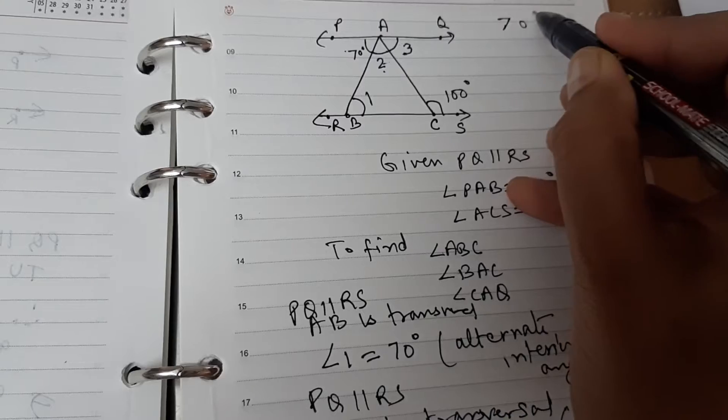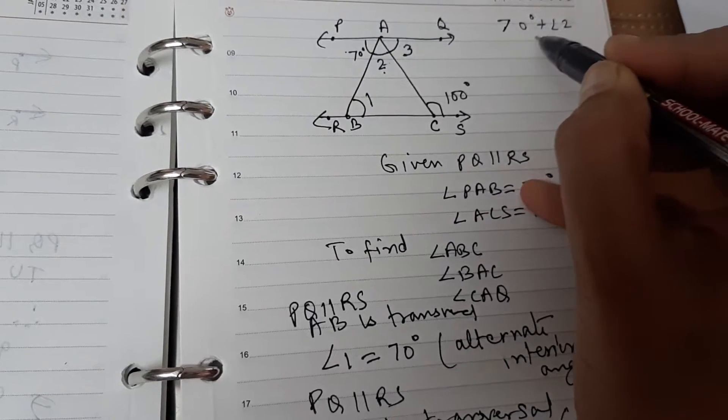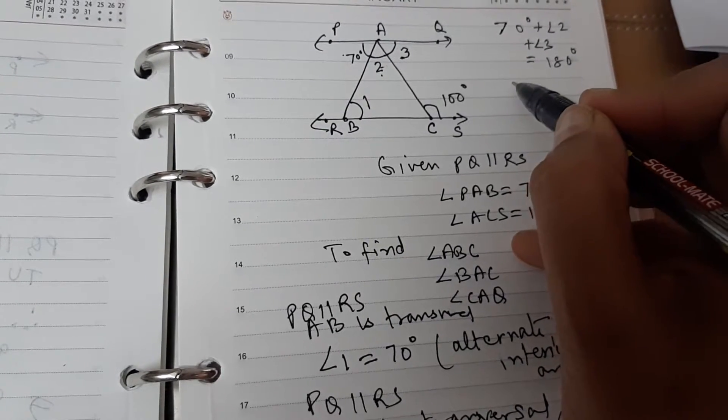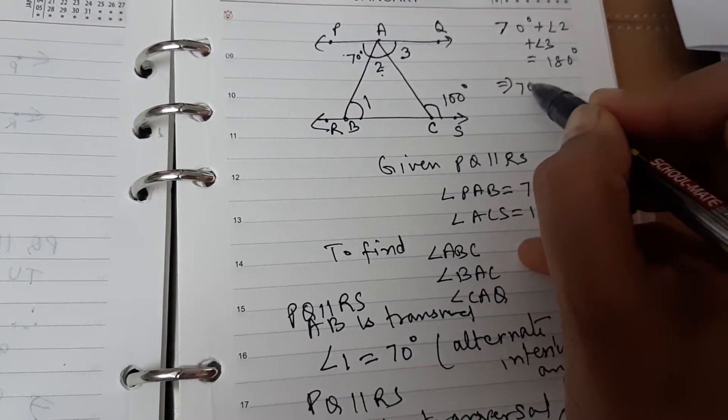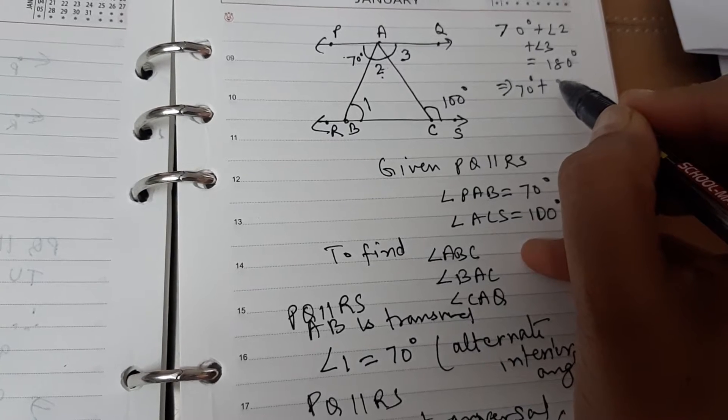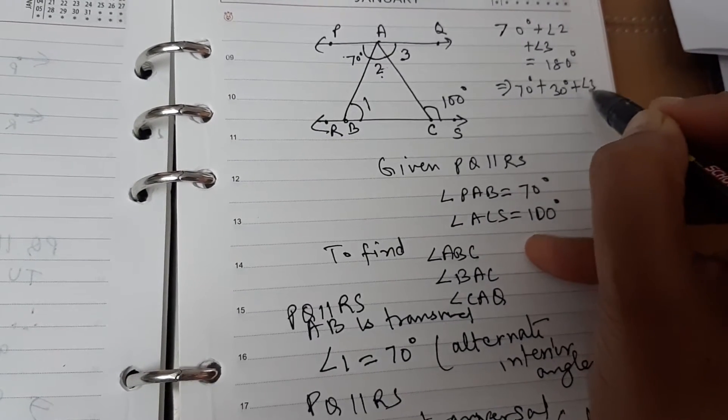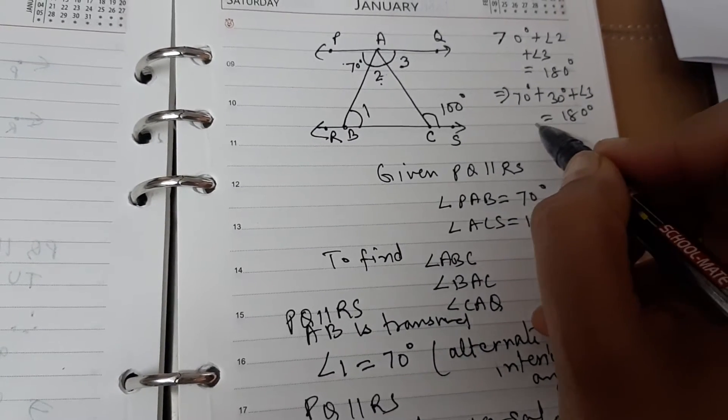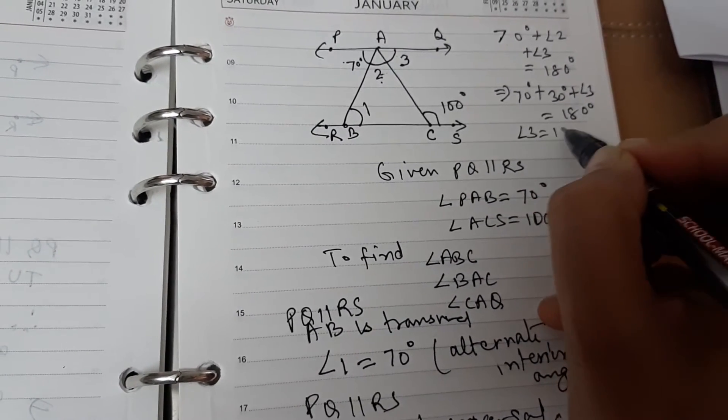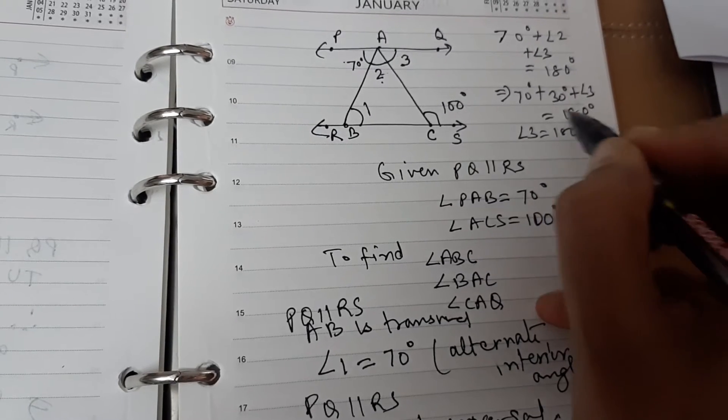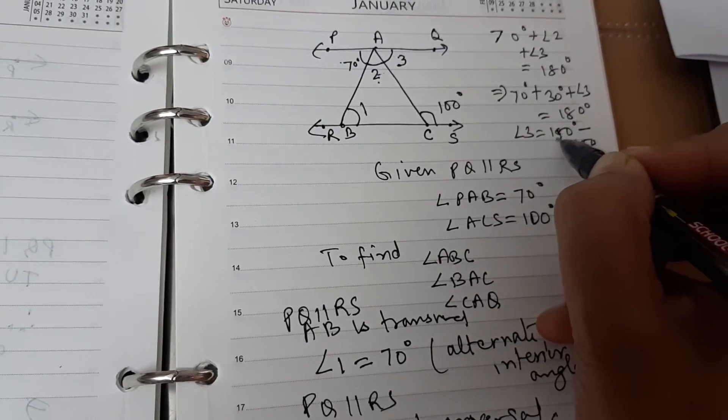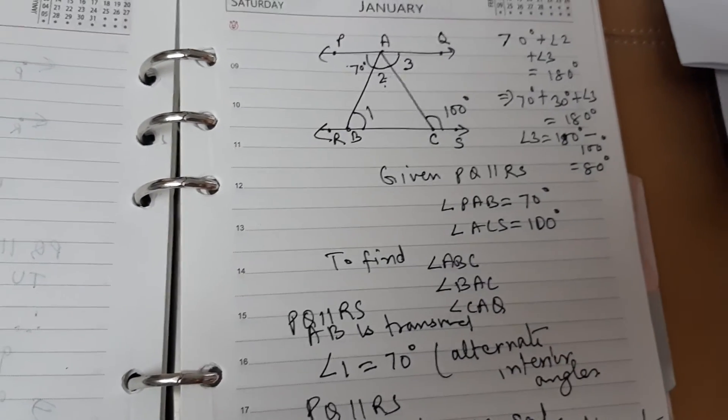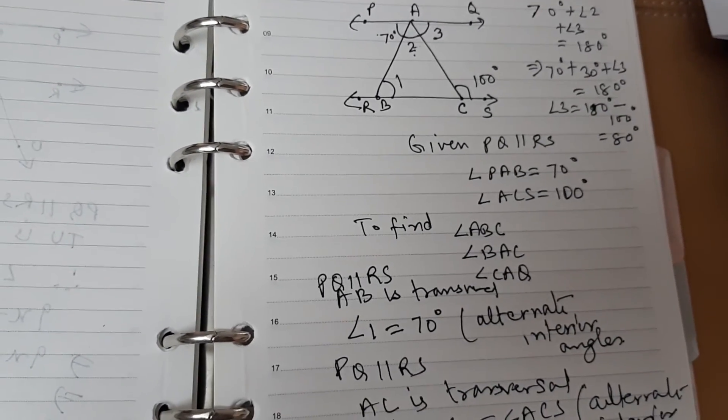So, I am writing it here. 70 degrees plus angle 2 plus angle 3 will be equal to 180 degrees. This implies 70 degrees plus 30 degrees plus angle 3 equal to 180 degrees. So, what is angle 3? 180 degrees minus 100 degrees which is equal to 80 degrees. I hope this question is clear to all of you.